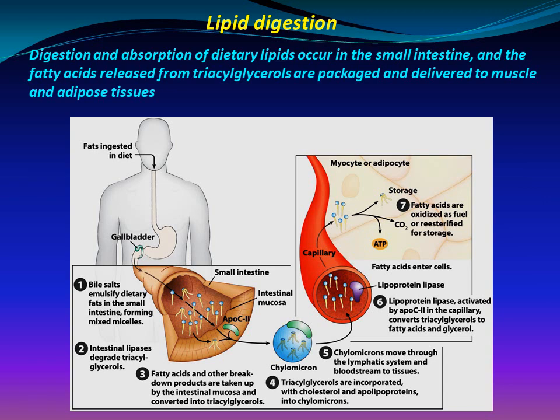Intestinal lipases degrade triacylglycerols. Fatty acids and other breakdown products are taken up by the intestinal mucosa and converted into triacylglycerols. These are incorporated with cholesterol and apolipoproteins into chylomicrons, which move through the lymphatic system and bloodstream to tissues. Lipoprotein lipase, activated by ApoC-II in the capillary, converts triacylglycerol to fatty acid and glycerol in myocytes and adipocytes.